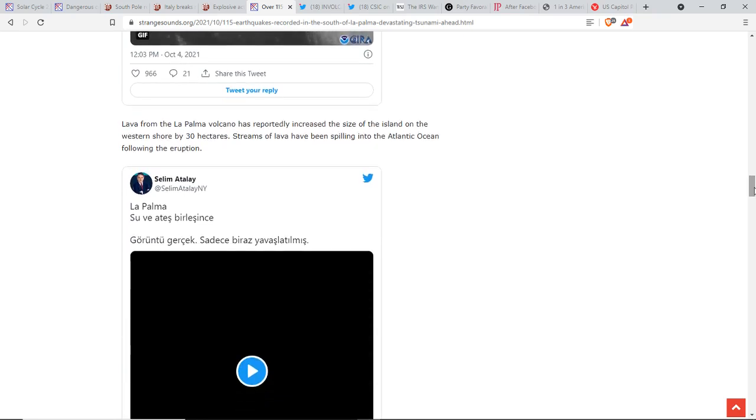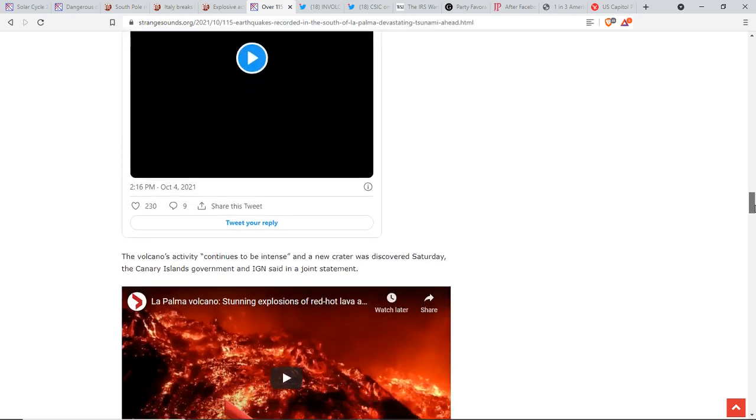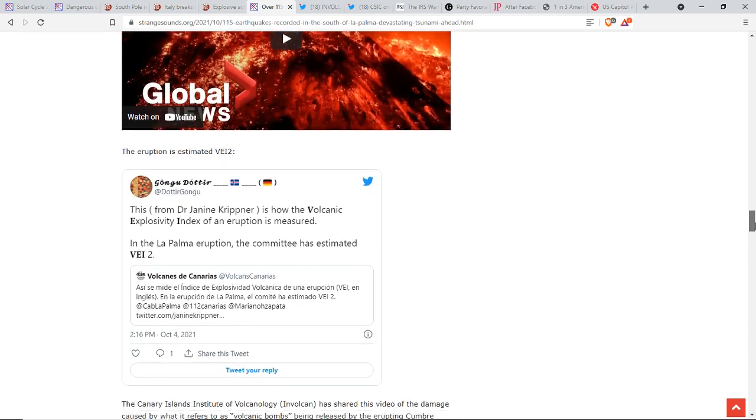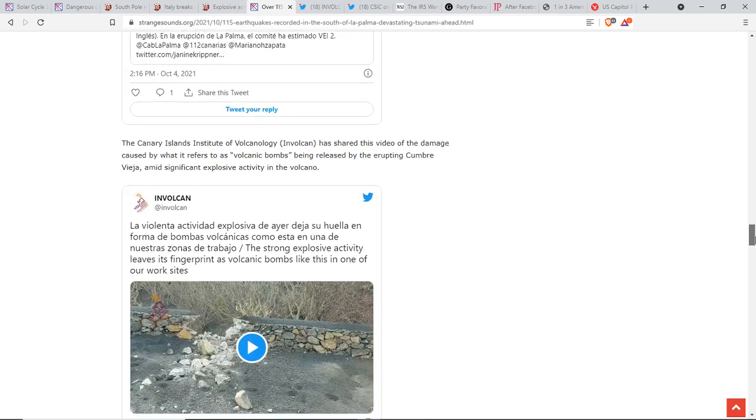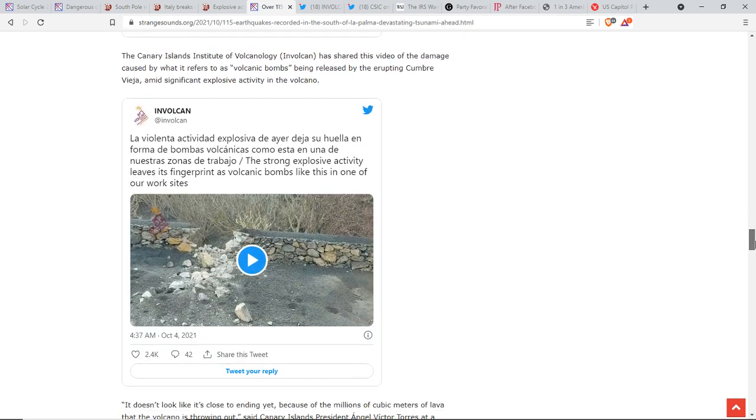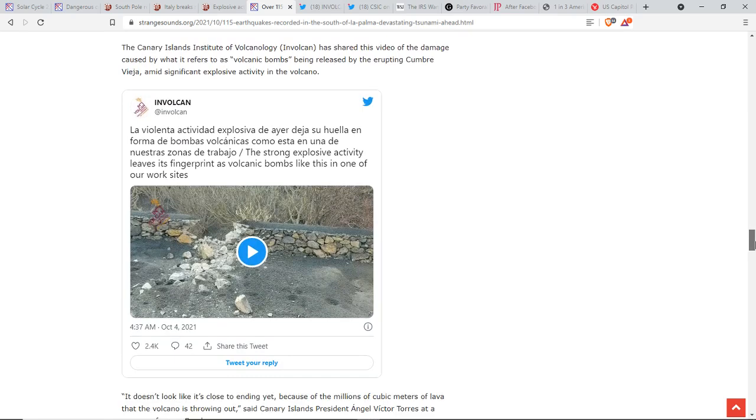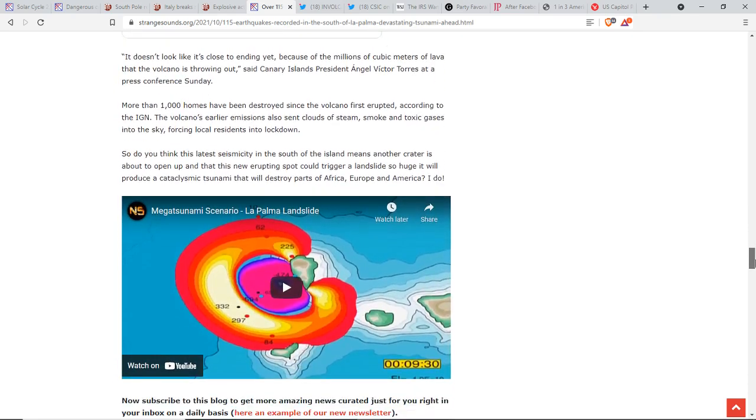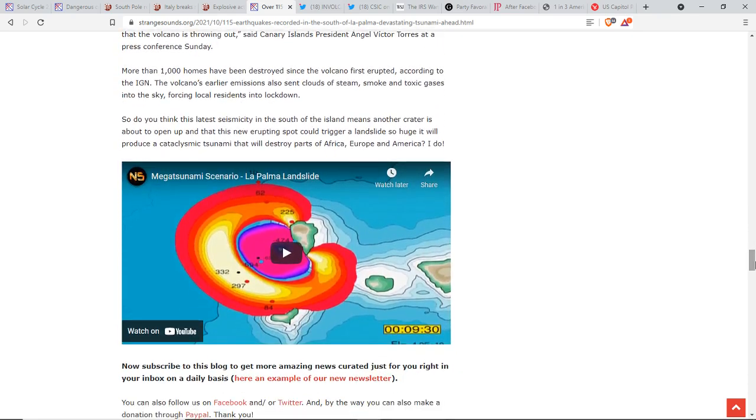And lava from the volcano has reportedly increased the size of the island on the western shore by 30 hectares. Streams of lava has been spilling into the Atlantic Ocean. And it's actually pretty close to where a previous eruption had built a shelf. And you can see there's literally bombs being exploded, in this case, taking out a stone wall. So, it has no signs of stopping yet.